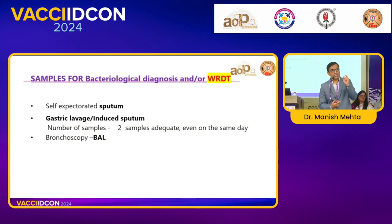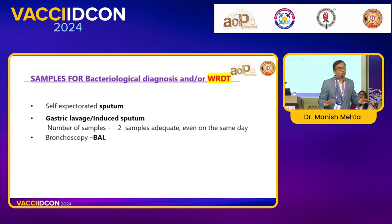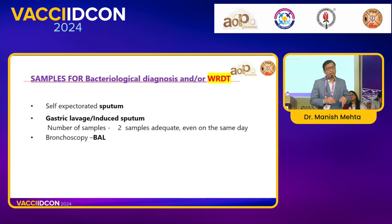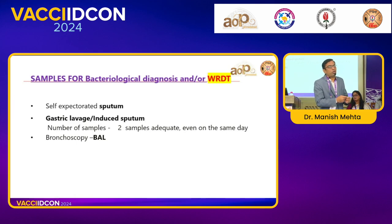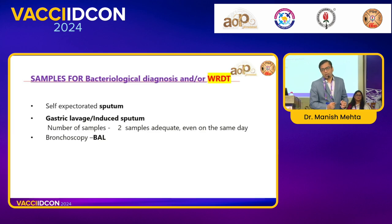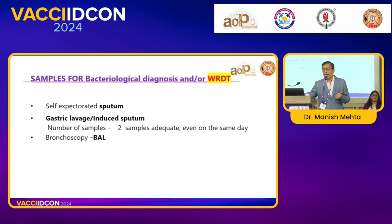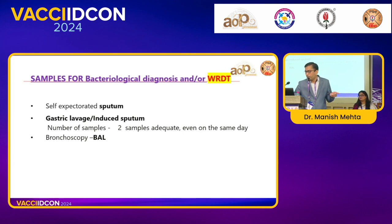Samples can be BAL, induced sputum, pleural fluid, CSF, or tissue biopsy. Yield from tissue biopsy is much better than any fluid. For pleural effusion, pleural fluid yield for CBNAAT is very poor because it is a hypersensitivity reaction, not primary TB infection in the fluid. But if you can send pleural biopsy, CBNAAT on biopsy will be positive even when pleural fluid CBNAAT is negative. BAL is a good sample if the child is intubated or has a pneumonia not improving by any means — in which case go for bronchoscopy.